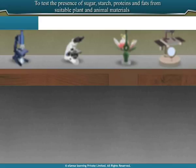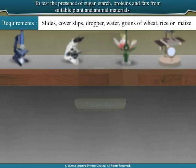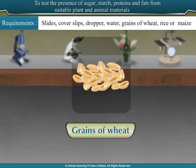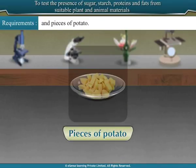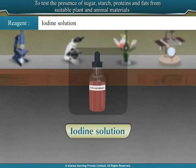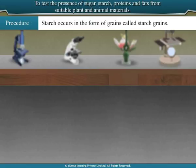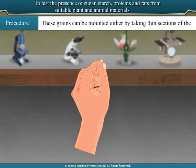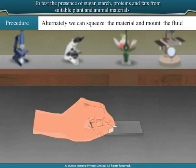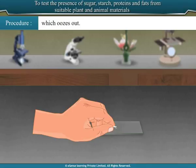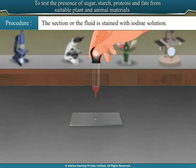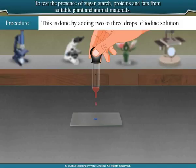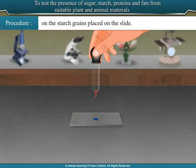Test 2: Test for starch. For testing the presence of starch, the following materials are required: slides, cover slips, dropper, water, grains of wheat, rice or maize, and pieces of potato. Reagent: iodine solution. Procedure: Starch occurs in the form of grains called starch grains. These grains can be mounted either by taking thin sections of the selected material, or by squeezing the material and mounting the fluid that oozes out. The section or fluid is stained with iodine solution by adding 2 to 3 drops of iodine solution on the starch grains placed on the slide.